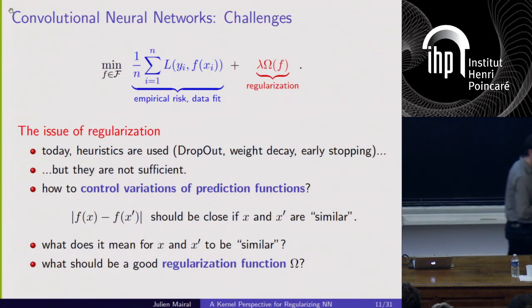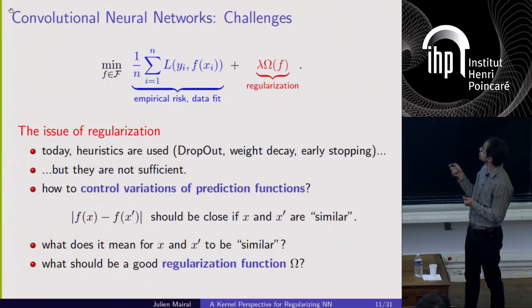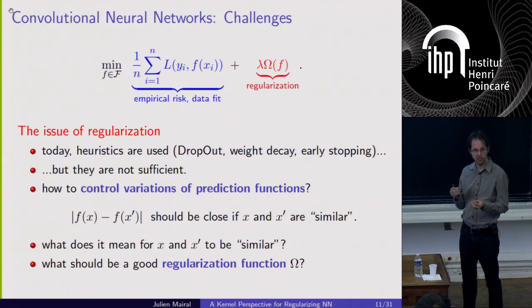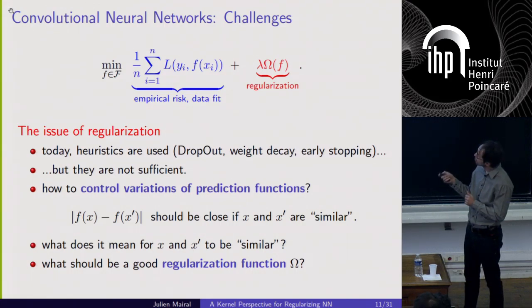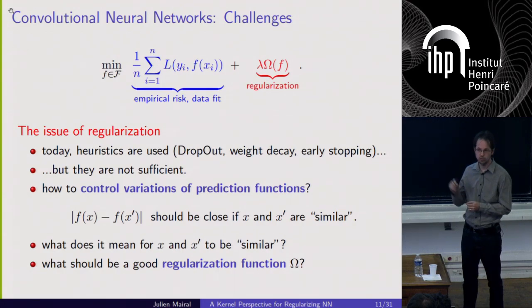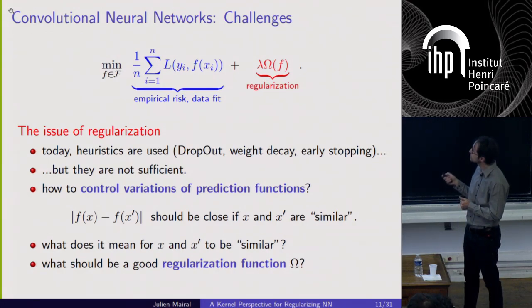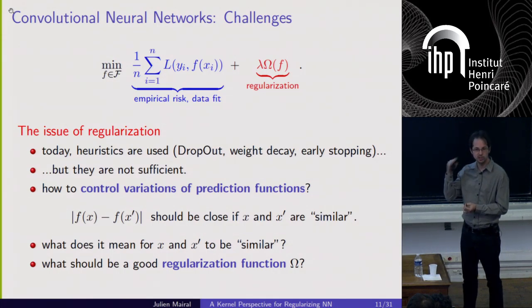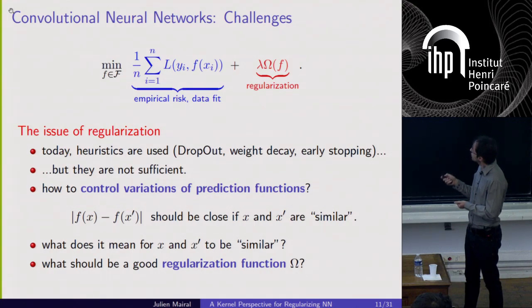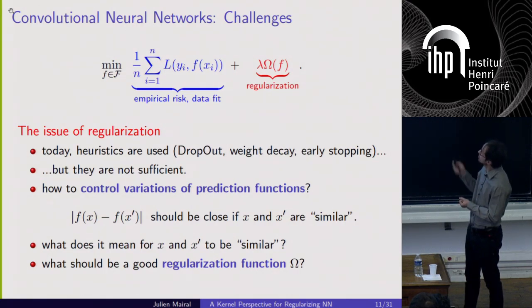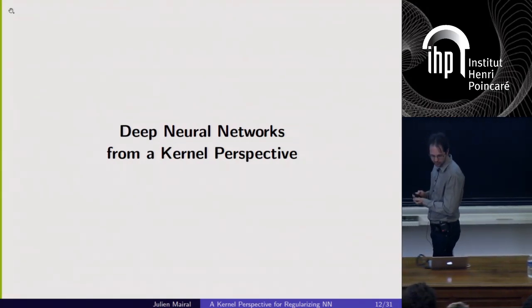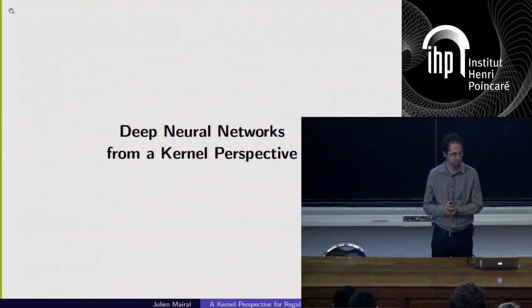One of the big questions we want to ask is: is there really a way to control the variations of a prediction function? When we talk about regularization, most of the time what we try to do is induce smoothness in the prediction function — controlling how far f of x will be from f of x prime when x and x prime are close. The first question is what it means for x and x prime to be similar; for images, probably not L2 distance. And even if you have a good definition of similarity, how do you use it to regularize?